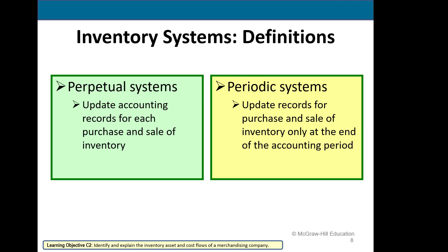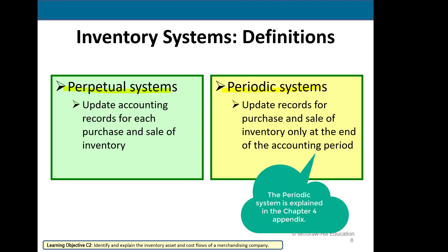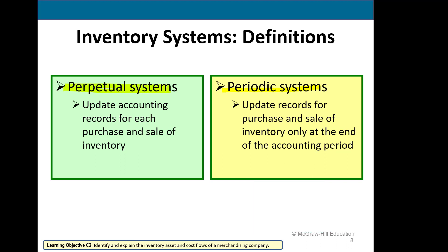There are two inventory systems: perpetual and periodic. We will look at the perpetual system, where the records are updated after each purchase and sale.